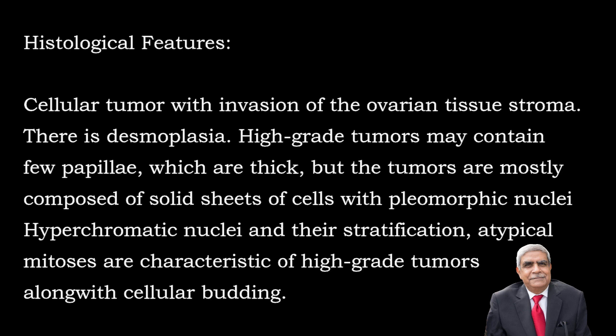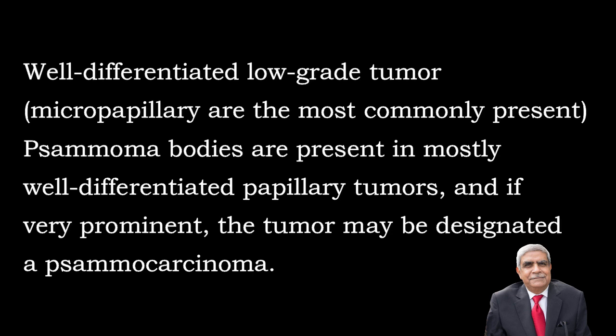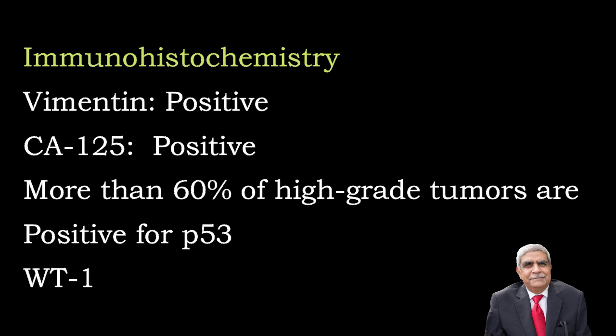Histologically, the tumors are very cellular and show invasion of the ovarian stroma. High-grade tumors (grade 2 or 3) contain very few papillary structures and are mostly composed of solid sheets of cells with pleomorphic, hyperchromatic nuclei and atypical mitoses; cellular budding and stratification are also present. Low-grade or well-differentiated tumors show a micropapillary pattern with non-branching, lace-like papillae and low-grade nuclei. Psammoma bodies are present in most well-differentiated tumors; if prominent, the tumor is called psammoma carcinoma. Immunohistochemistry: vimentin positive, CA125 positive; more than 60 percent of high-grade and less than 10 percent of low-grade tumors show positivity for p53; WT1 is positive.